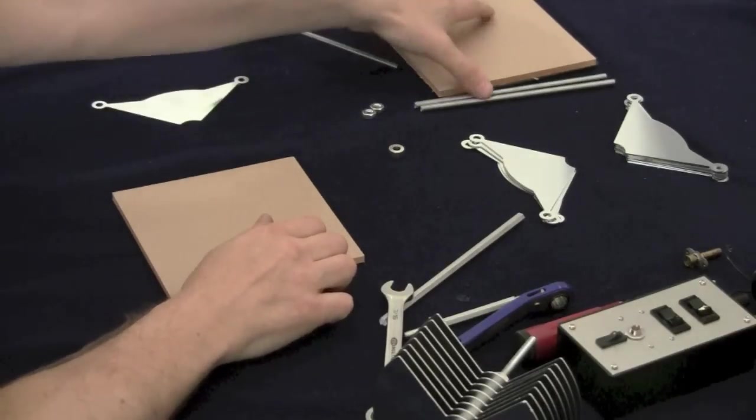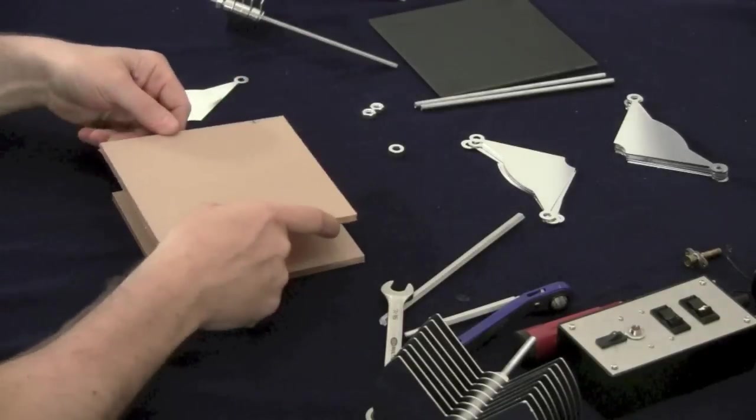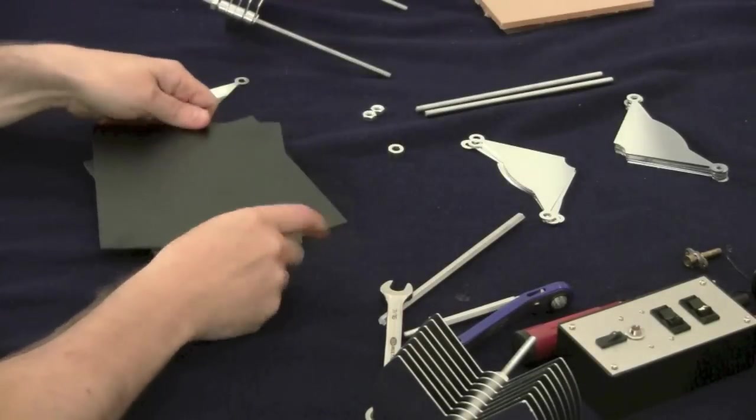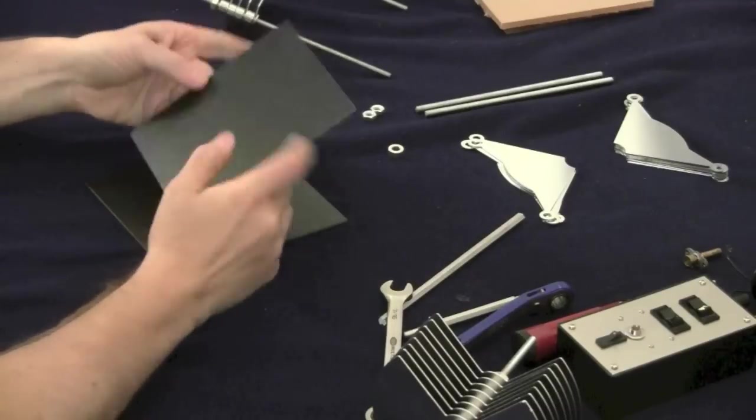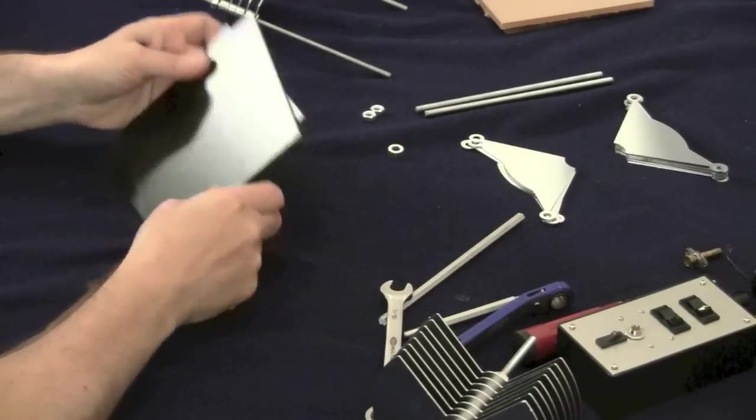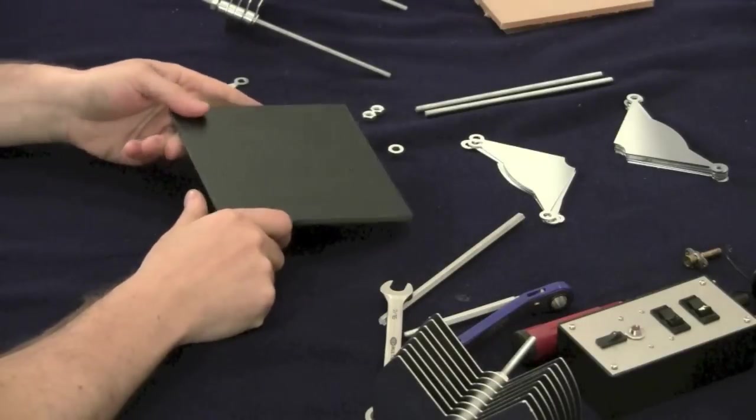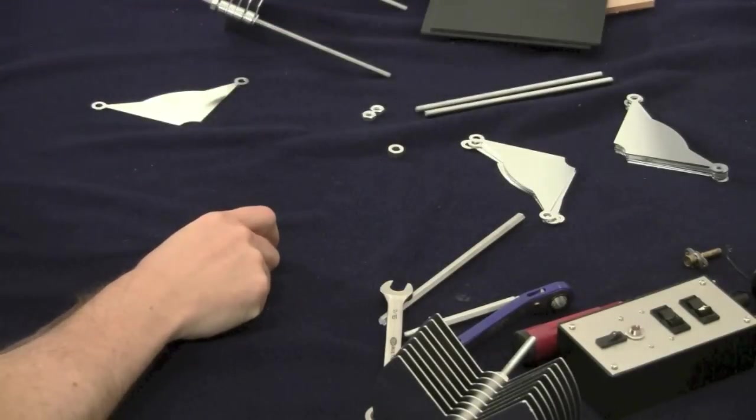So we drill the four holes here, the one hole here, we do that on two different pieces of plexiglass. I also use phenolic which is basically like PC board material obviously without any traces on it. That's good to use and you can even use wood for that matter, it doesn't really matter.